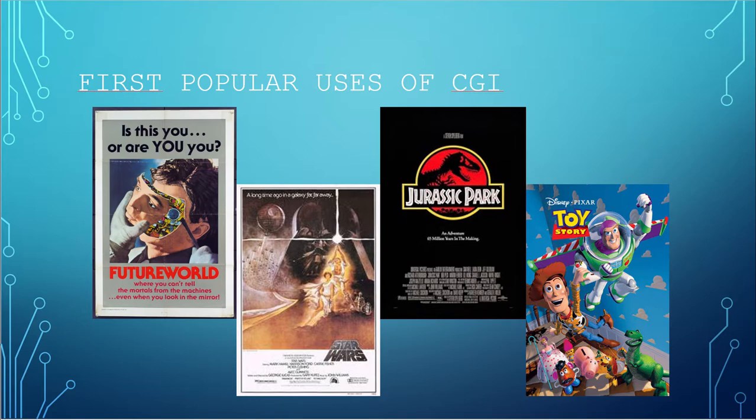A lot of these early films became very popular because of their use of CGI. 3D CGI was first used in the movie Futureworld, showing a robotic face being removed from a head. George Lucas implemented CGI in Star Wars: A New Hope by merging it with green screen and other film methods, animating a wireframe of the Death Star. Later, in 1993, Jurassic Park used CGI to create full-textured dinosaurs which looked astonishing at the time. The first full-length CGI film, Pixar's Toy Story in 1995, led the charge in 3D animation.